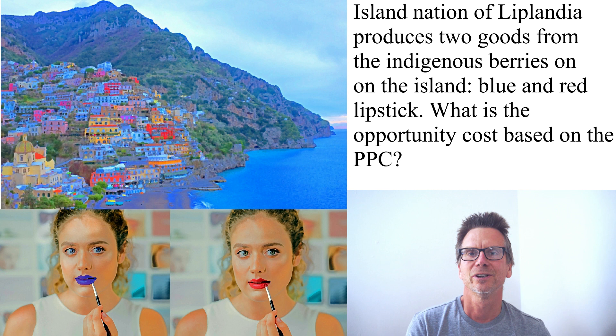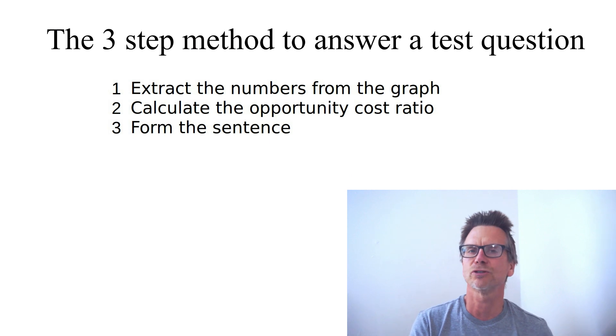My method is three steps. First step is to extract the numbers from the graph. Usually there's a graph and they'll have some points on the graph and you have to extract it and put it into a table. Second is to simply calculate the cost, the opportunity cost ratio. It's a ratio between the two goods.